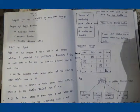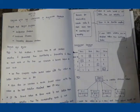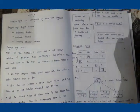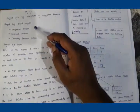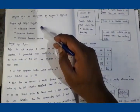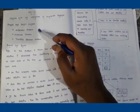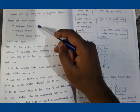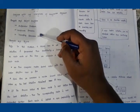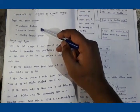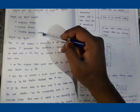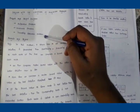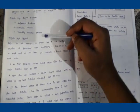Good morning everyone. Today we are going to cover Unit 5, and the topic is Branch and Bound. In Branch and Bound, we are going to discuss three things: the Assignment Problem, the Knapsack Problem, and the Traveling Salesman Problem.